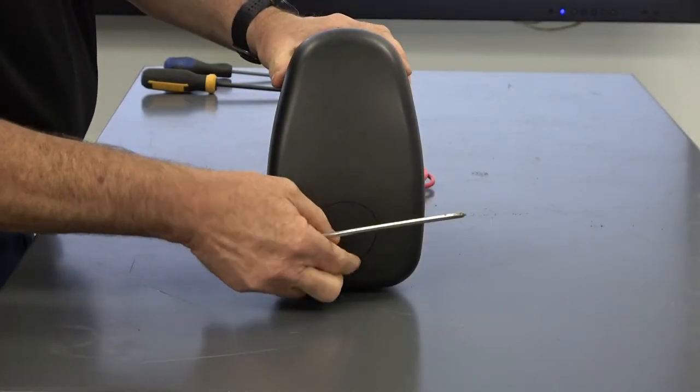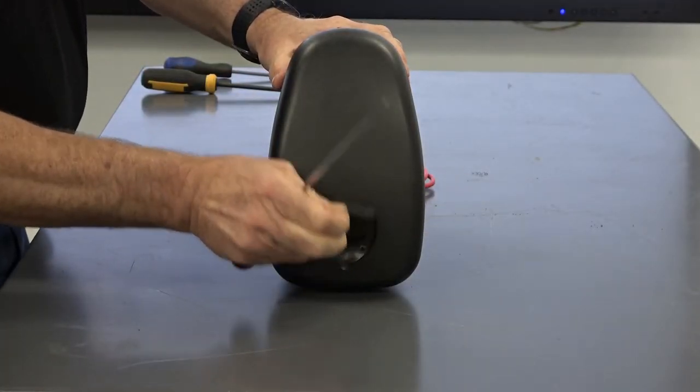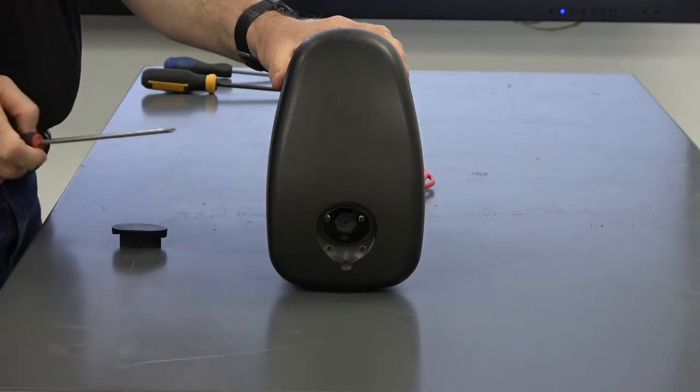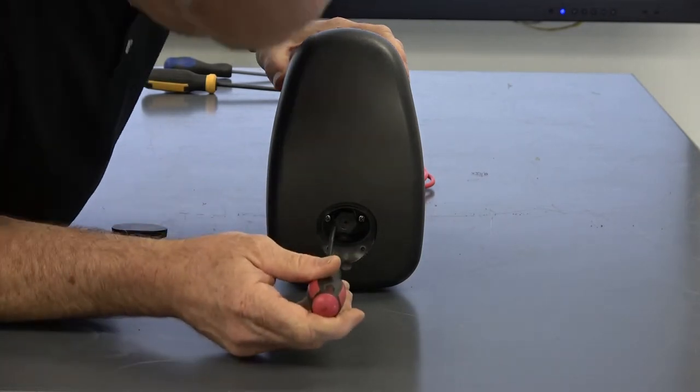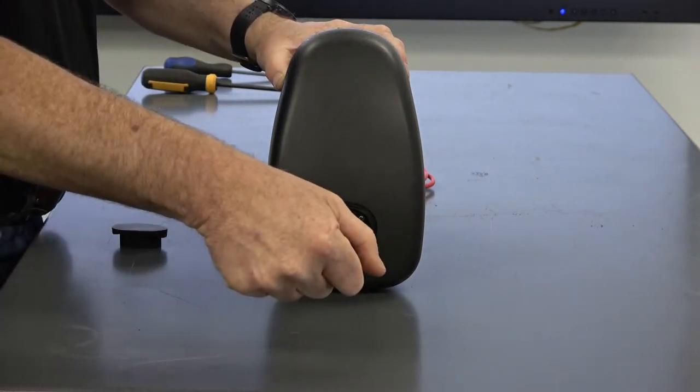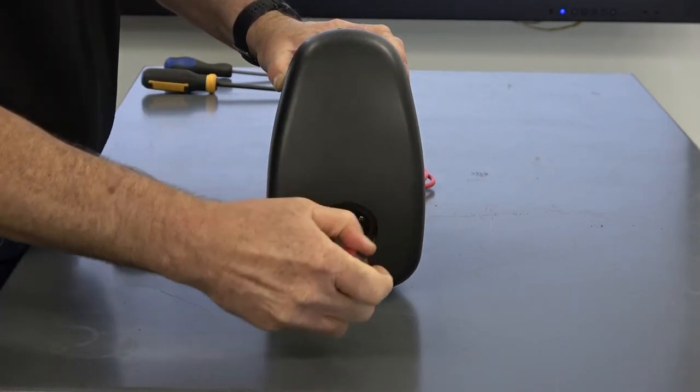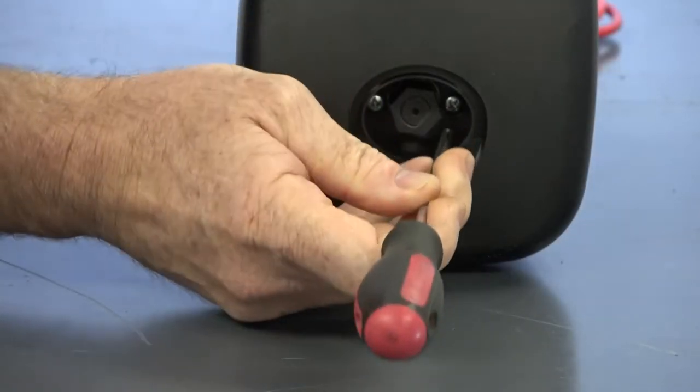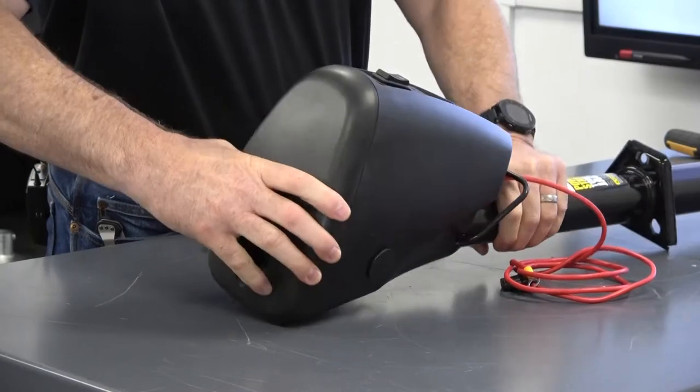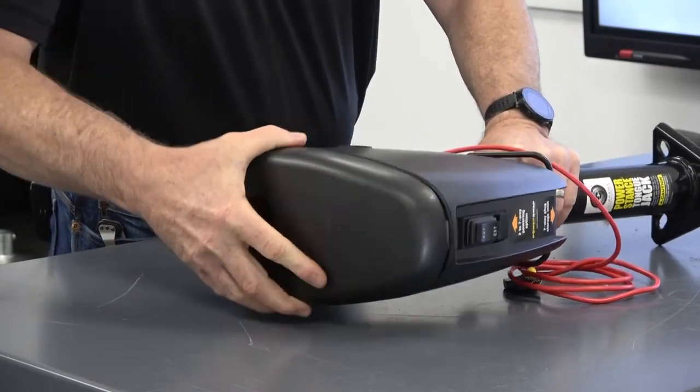Remove the rubber cap that conceals the manual override access port. Remove the two Phillips head screws contained within. You can now separate the head cover from the body of the PowerStance tongue jack.